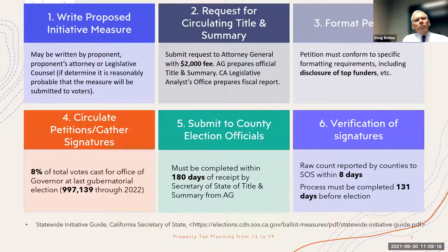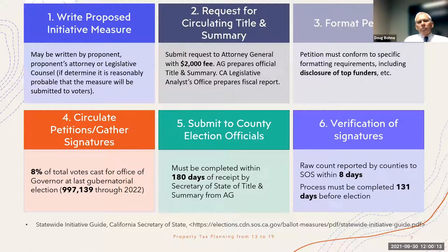What is the ballot initiative process? To get on the ballot, a ballot initiative requires signatures equal to eight percent of the total votes cast for the office of governor at the previous gubernatorial election — currently about one million signatures. Once you pass that eight percent threshold, you're on the ballot, and then it's a fifty percent threshold to pass a new law or even to amend the California Constitution. There is a 180-day period during which the campaign can obtain the required signatures, and all of that must be completed 131 days before the relevant election.